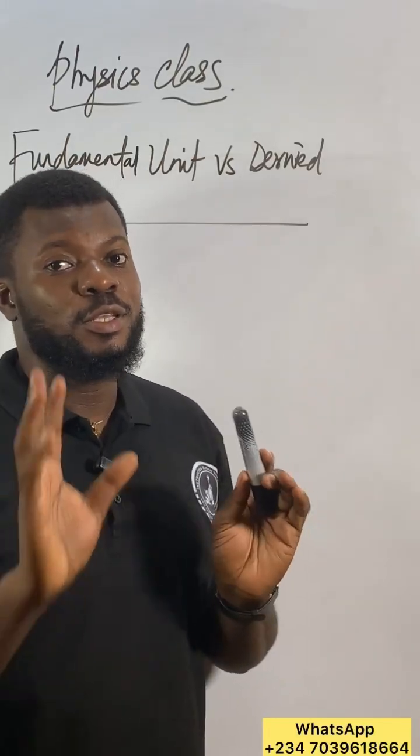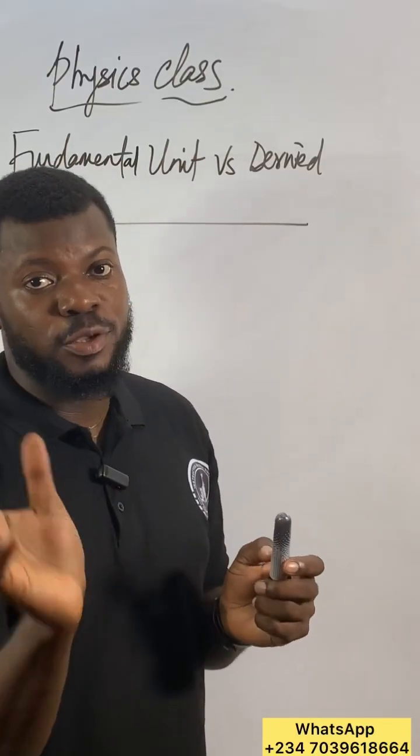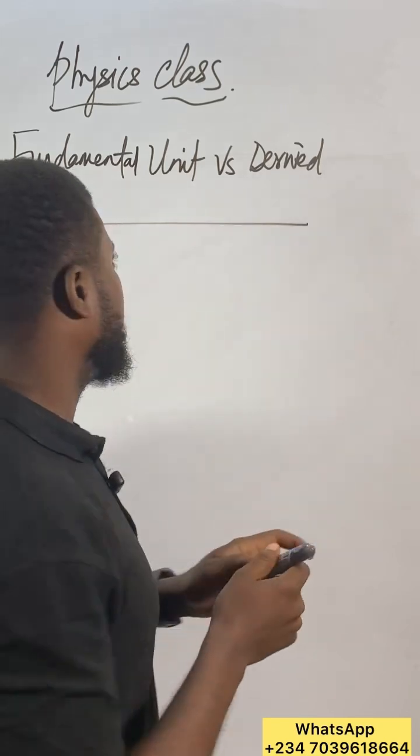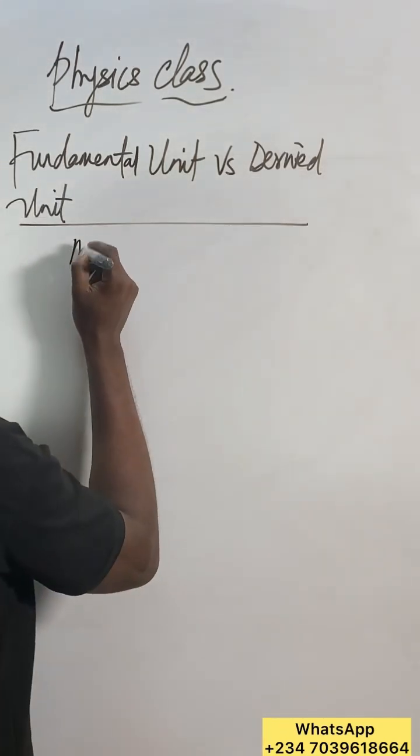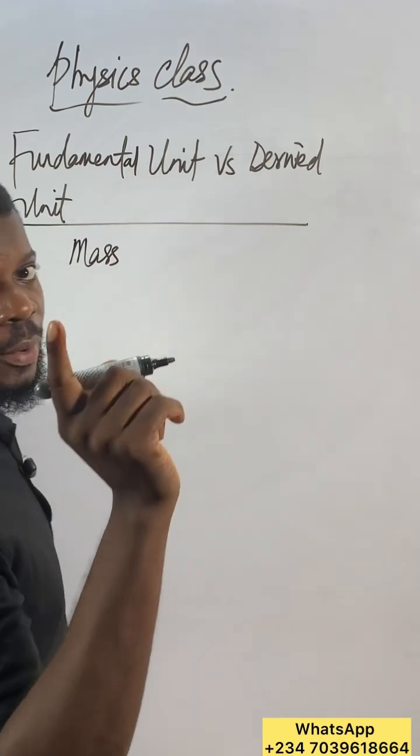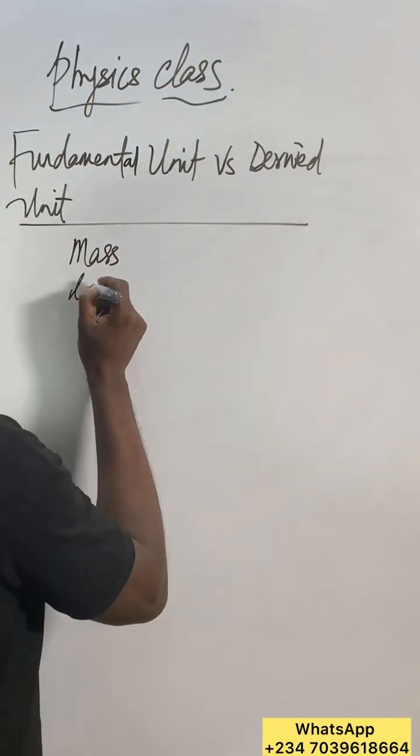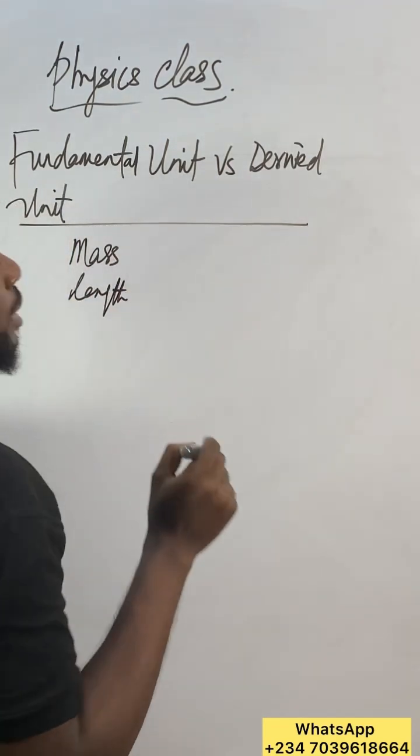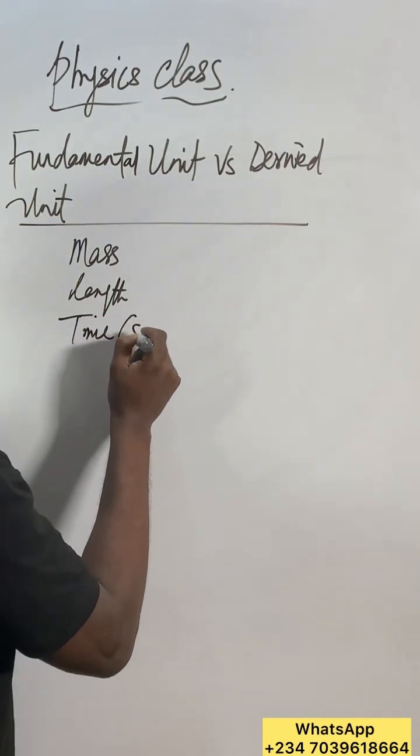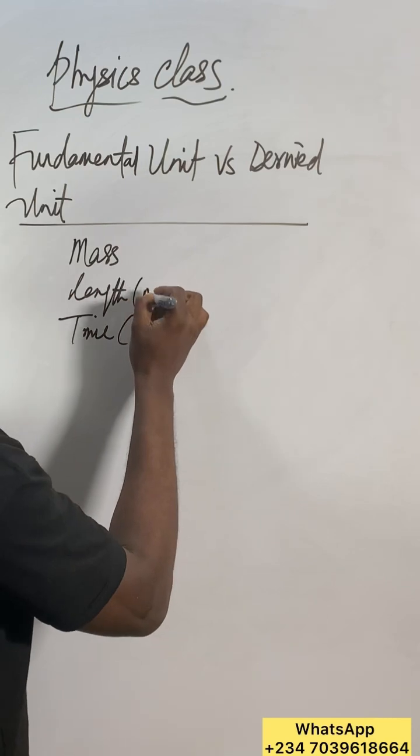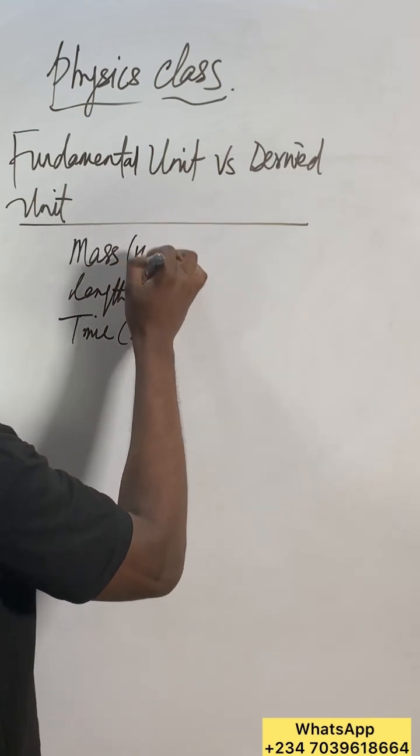The basic things you need to use for measurement - we have three basic fundamental quantities. We have mass, length, and time. Time in seconds, length in meters, mass in kilograms.